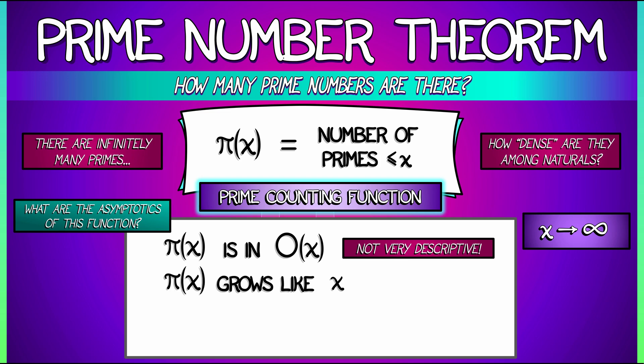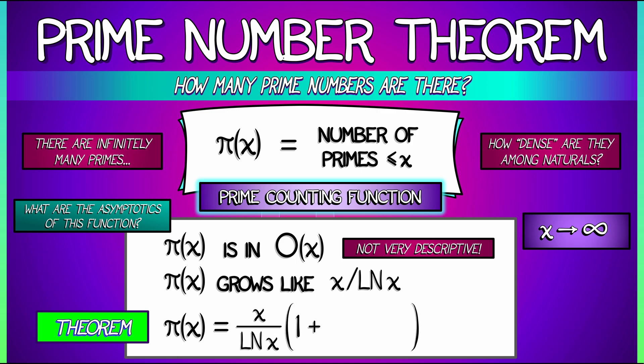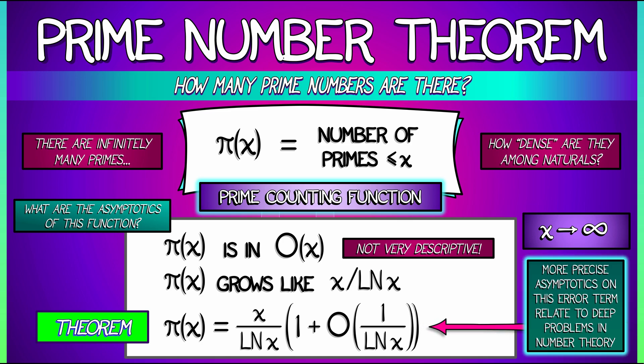And that's the content of the prime number theorem, which in its simplest form says, somewhat imprecisely, that pi of x grows like x divided by log of x. So as x goes to infinity, this does go to infinity, but not all that quickly. A more precise version uses this language of big O and says that pi of x is x over log of x times quantity 1 plus big O of 1 over log of x. So it's giving you a bound on the term past the leading order term in the asymptotics of pi. And that's kind of cool, and it's kind of deep. If you were to get more precise asymptotics, if you were to get a better bound, then this would connect to some very, very deep problems in number theory, things like the Riemann hypothesis and other really cool stuff.